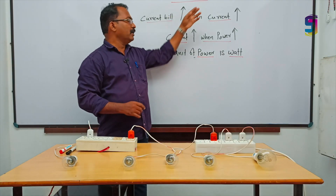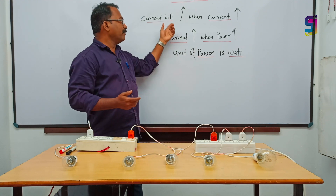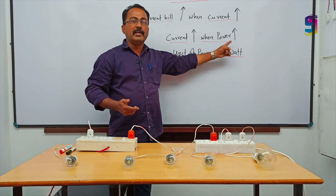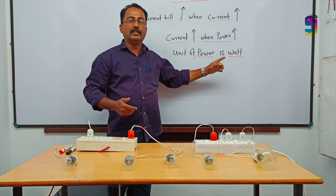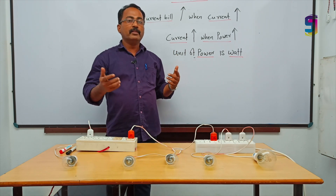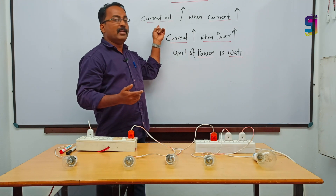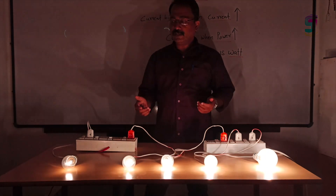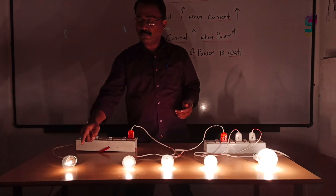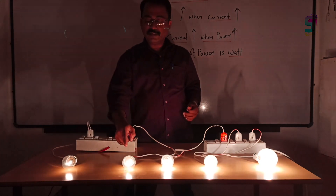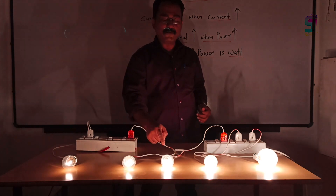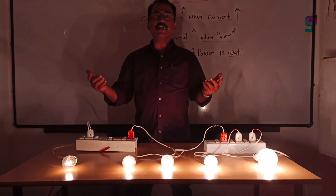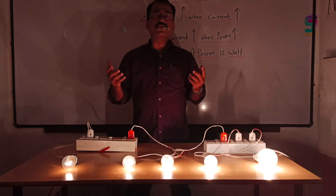Next is about the electricity bill. When does the electricity bill become high? When current is high, when power is high. When the wattage of an instrument is more, the current will be high and the electricity bill will be high. Here is a demonstration of incandescent lamps with different powers: 25 watt, 40 watt, 60 watt, 100 watt, and 200 watt. You can see when the wattage increases, the light emitted by the bulb also increases.